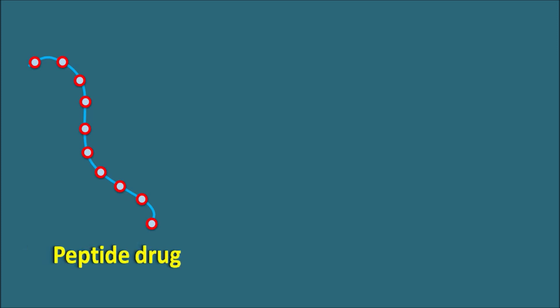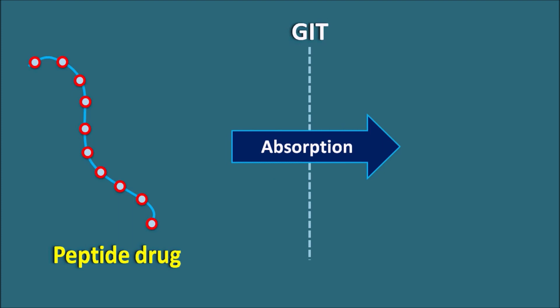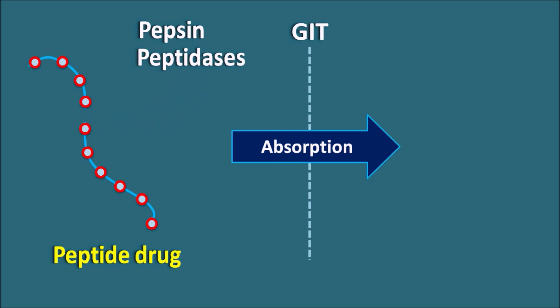What happens to peptide drugs when given by the oral route? When a peptide drug is administered orally, it must cross the GI tract and be absorbed into systemic circulation. However, within the stomach, proteolytic enzymes like pepsin may interact with these peptide drugs. Additionally, metabolic enzymes like peptidases can break the peptide chain, causing fragmentation. This fragmented peptide is non-functional and loses its activity. This is one of the key limitations of peptide drugs given orally.